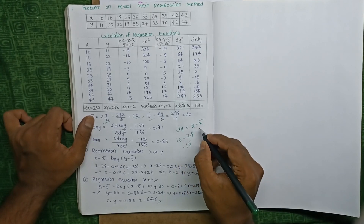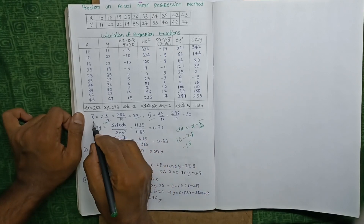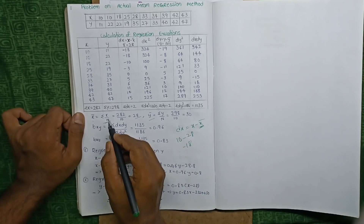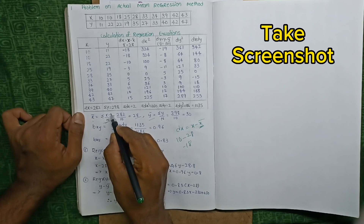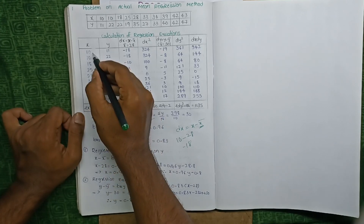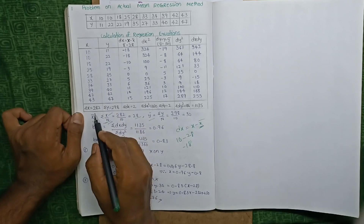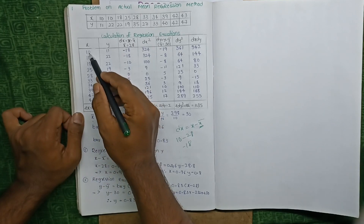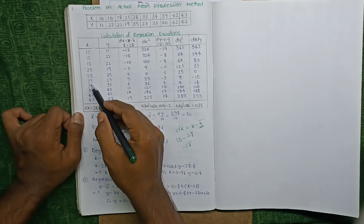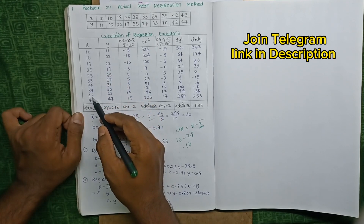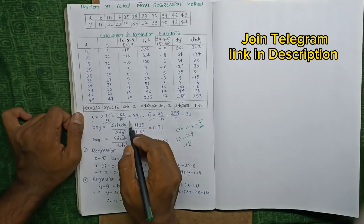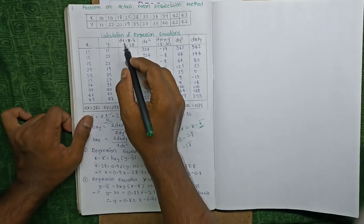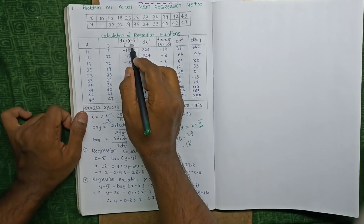For x̄, the formula is x̄ equals sum of x divided by n — sum of observations by number of observations. The sum of observations equals 282 and the number of observations is 10, so 282 divided by 10 equals 28.2.